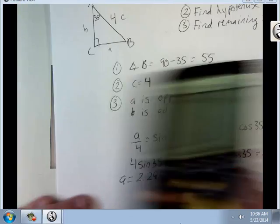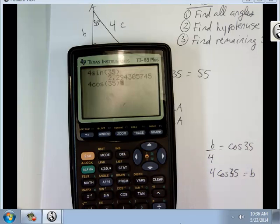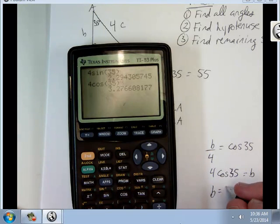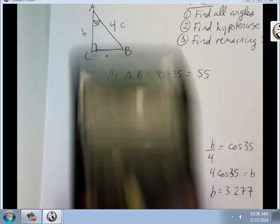And 4 cosine 35 gives me 3.277. Alright, that worked a little bit better. So we're going to do one more of these, where you actually have to find one of the angles, given the sides.